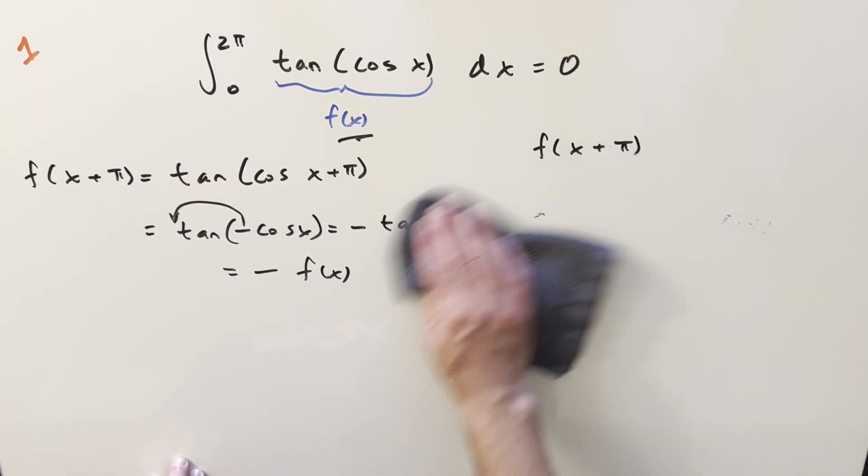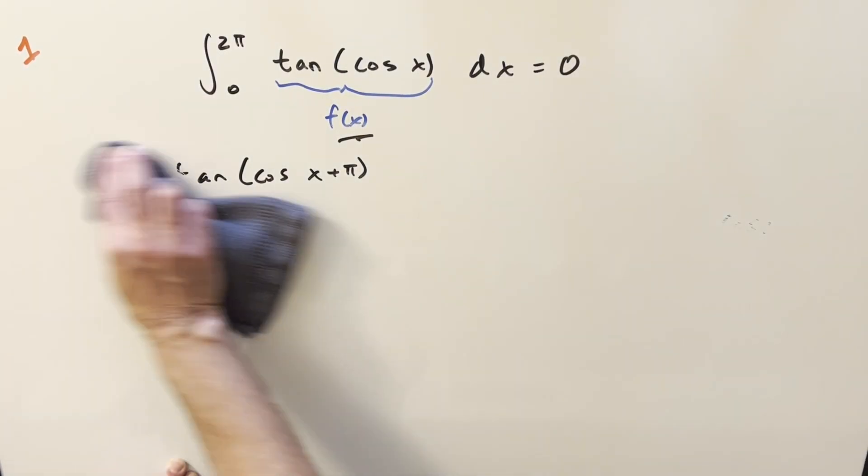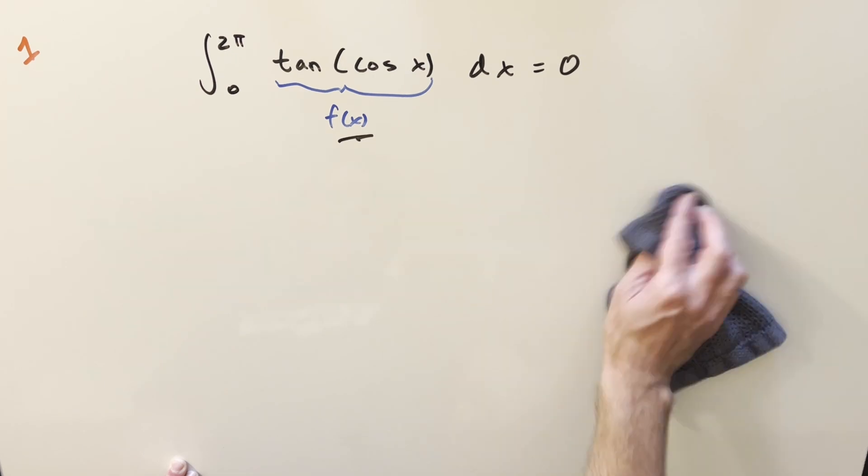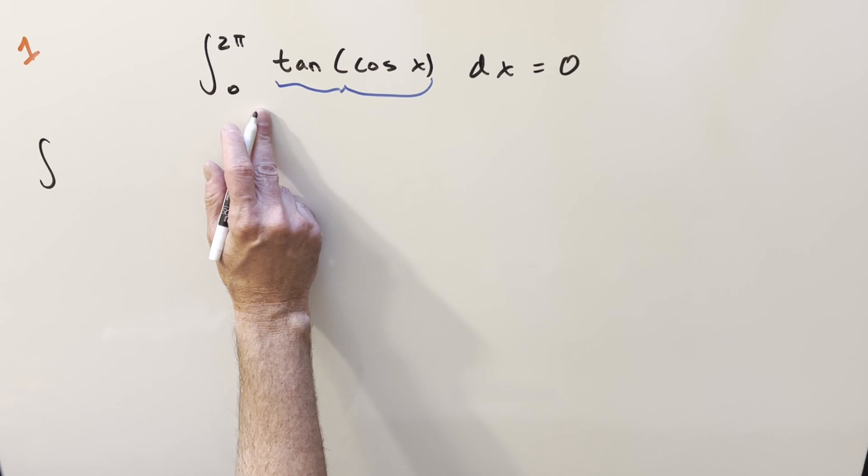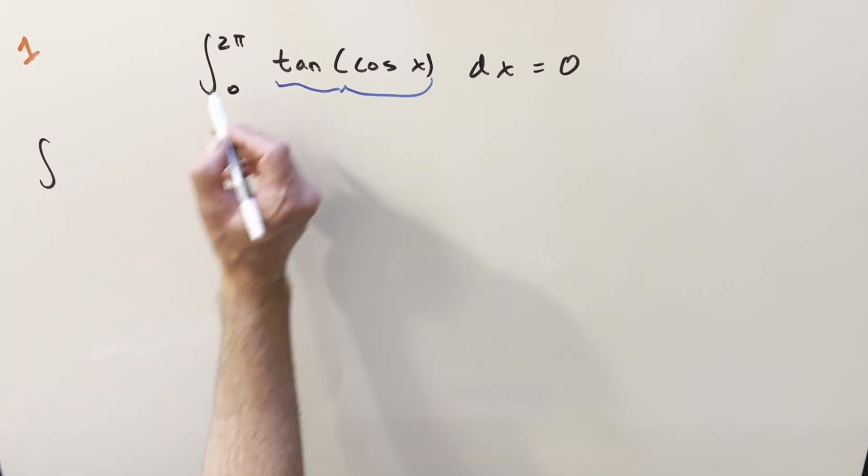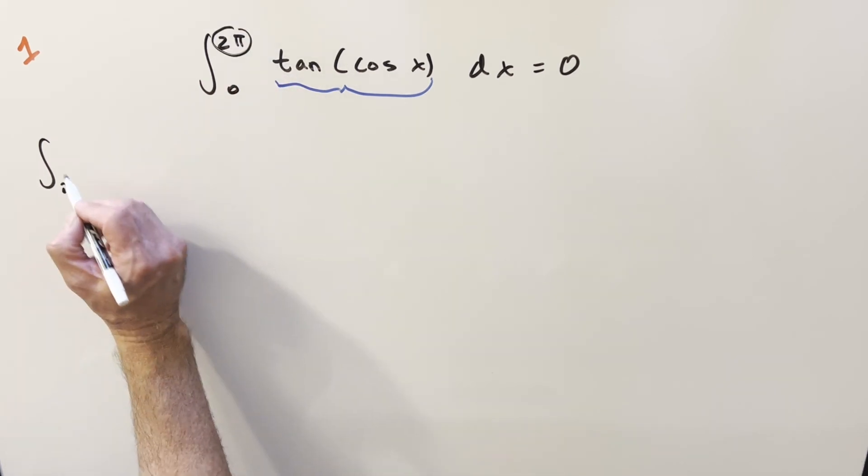And now if you want to see how this works, what we can do is do this out the long way because it's still not going to be very long to just break it up and show how this goes. So what we want to do is break this up on pi, just breaking the upper bound in half.